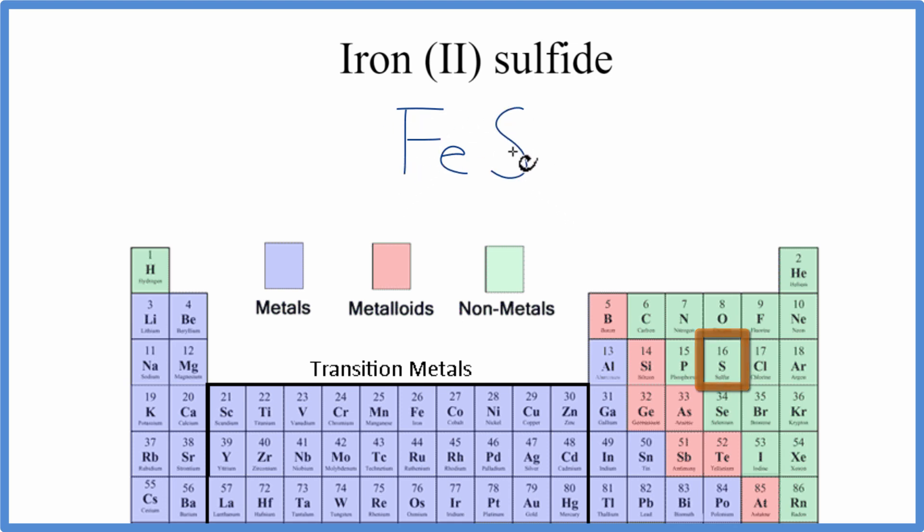So iron's a metal, sulfur is a non-metal. We have a metal and a non-metal, we have an ionic compound, and we need to think about the ionic charge for each of these elements when we write the formula.